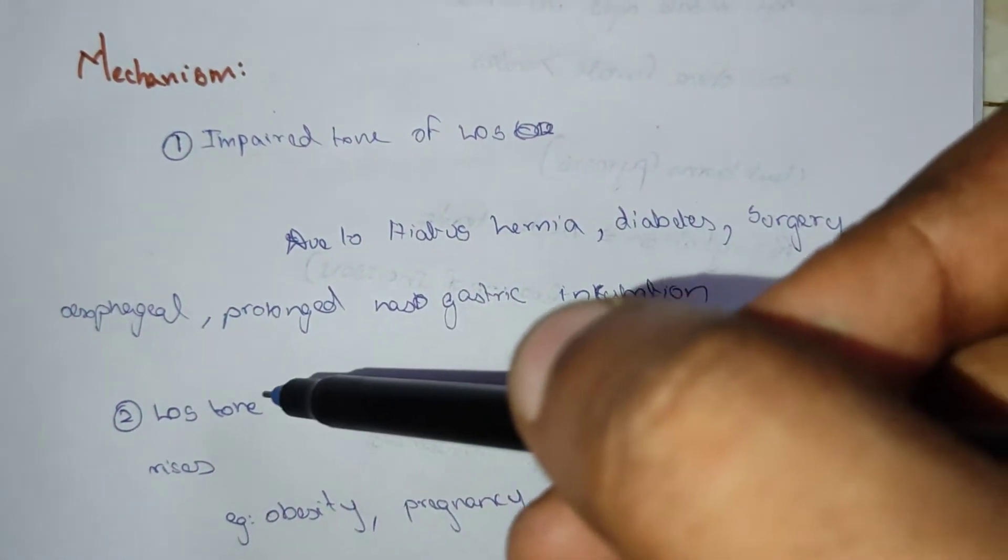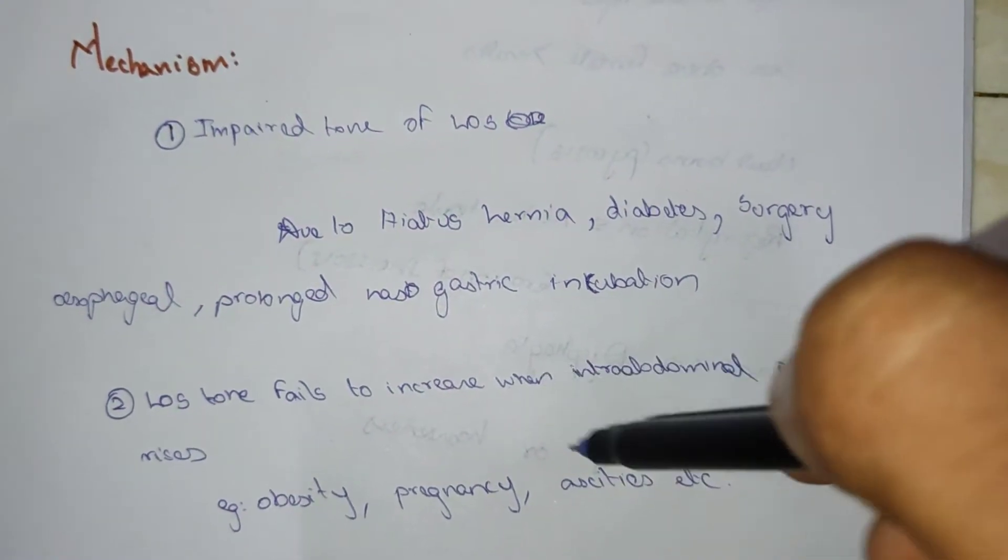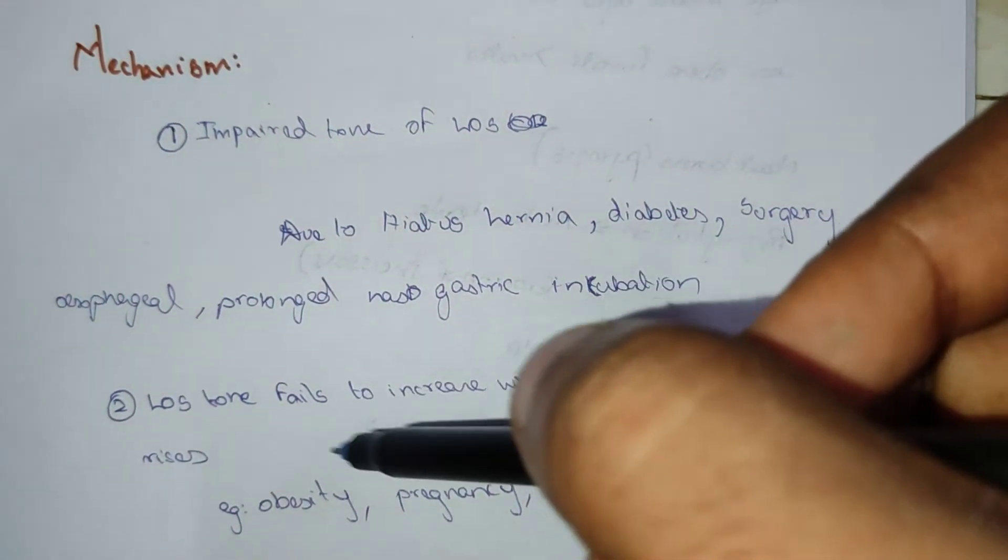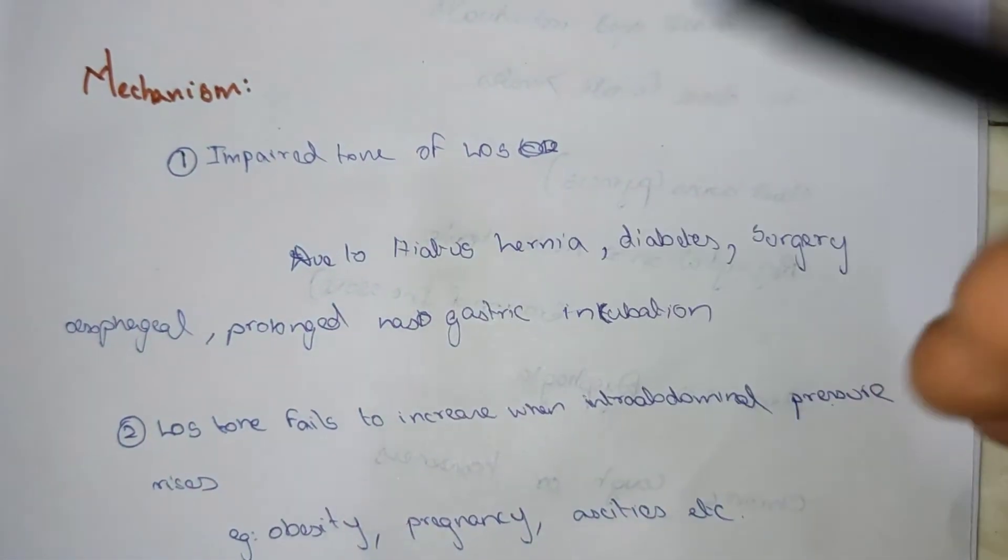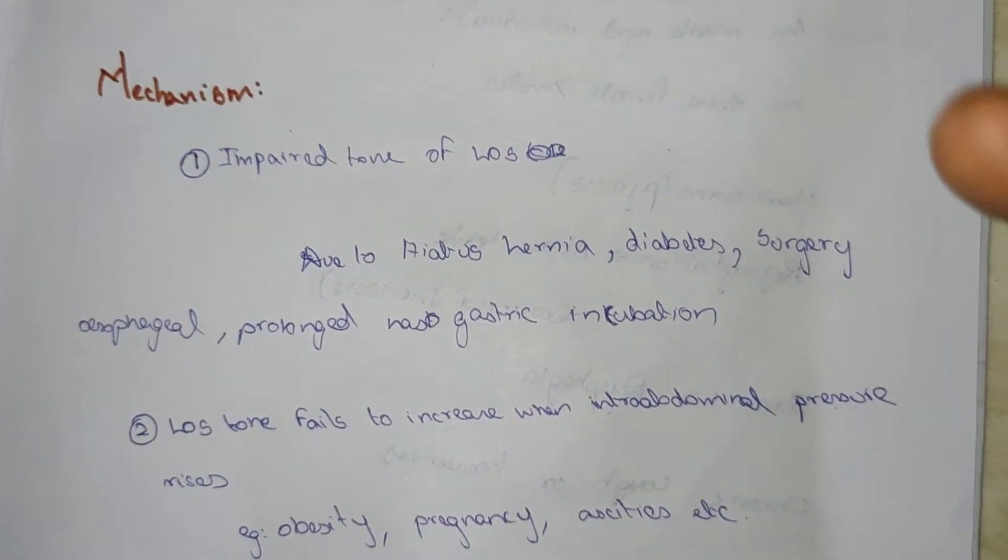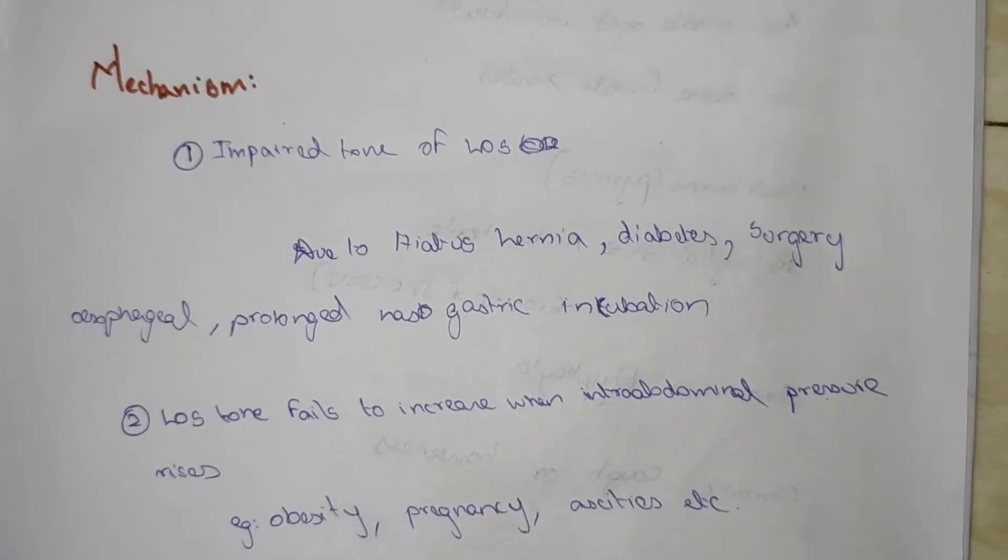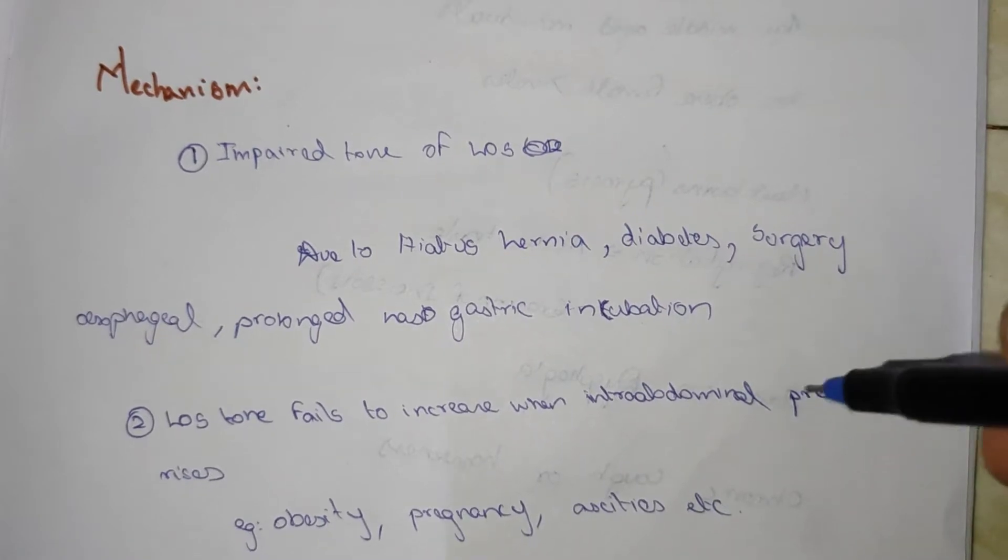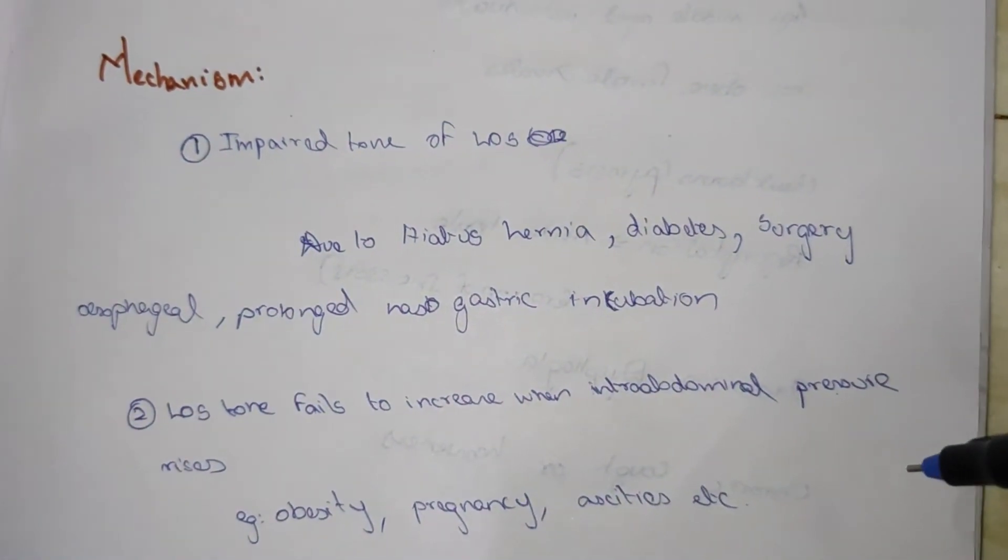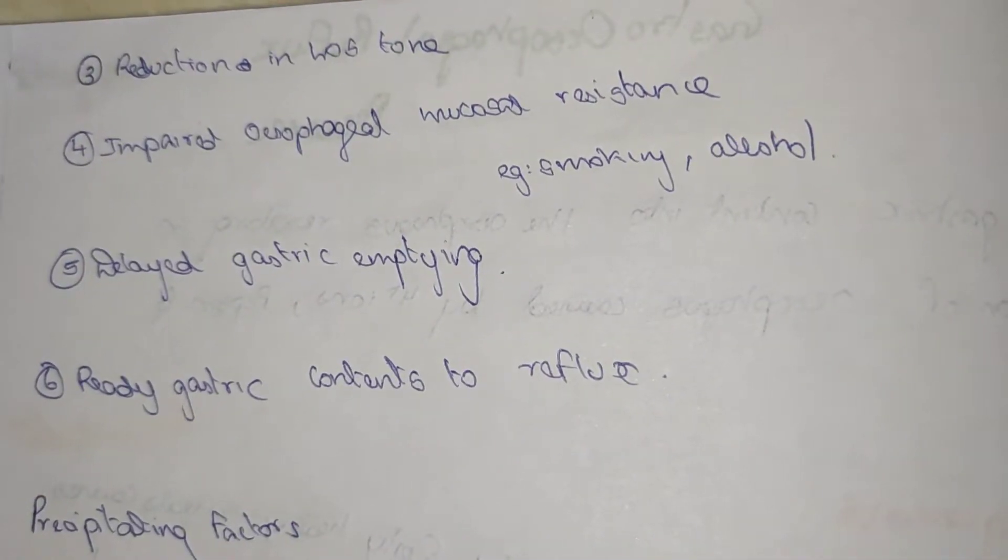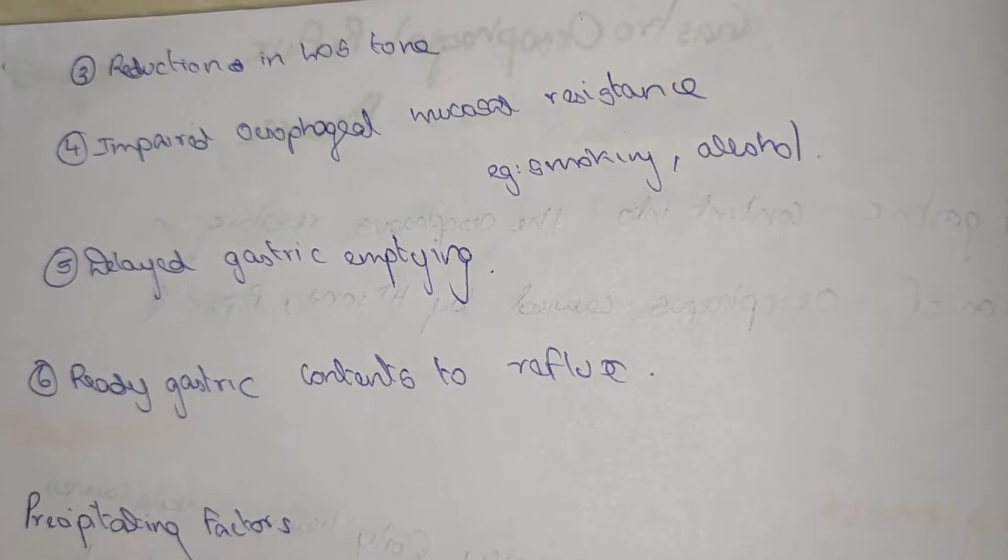The LES tone fails to increase when the intra-abdominal pressure increases in conditions like obesity, pregnancy, and ascites. In reduction of lower esophageal sphincter tone, impaired esophageal mucosal resistance due to smoking and alcohol, delayed gastric emptying, ready gastric content to reflux.